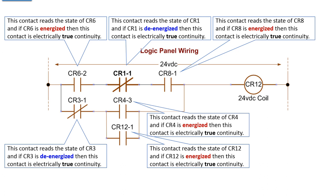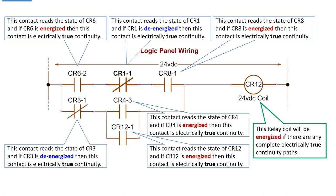These two, if CR4 and CR12 are energized, then you have electrical true continuity. Now notice that CR12-1 is a contact that's controlled by CR12. So if CR12 is energized, that closes this contact and bypasses CR4-3. Any logically true path through this set of contacts here will energize CR12.